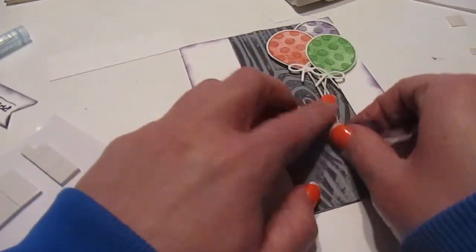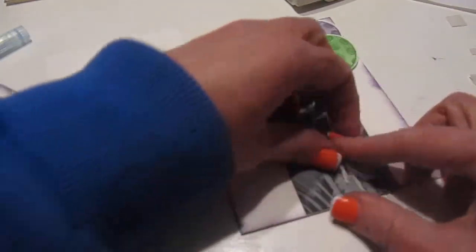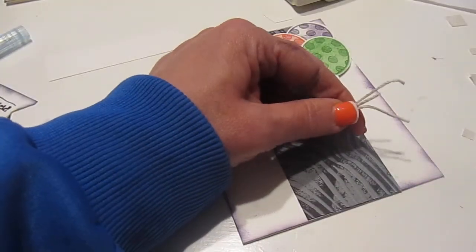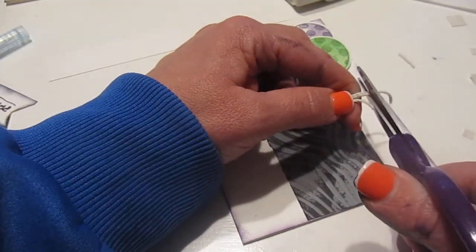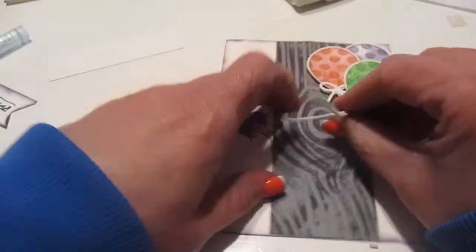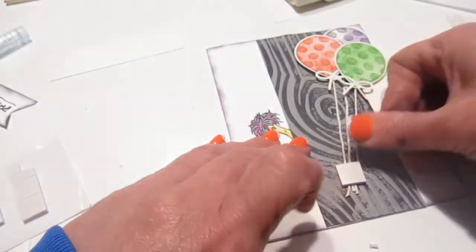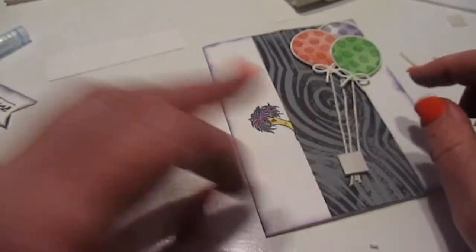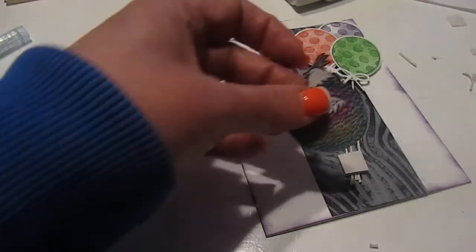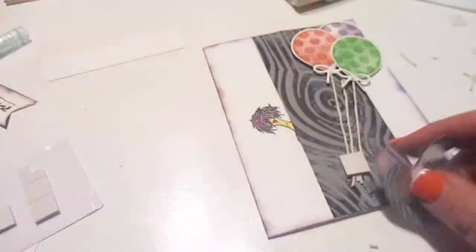Then I want to make sure that all three ties are equally at the bottom. Then I want to make sure that it's held in place by a glue dot and I'm going to adhere my stick.